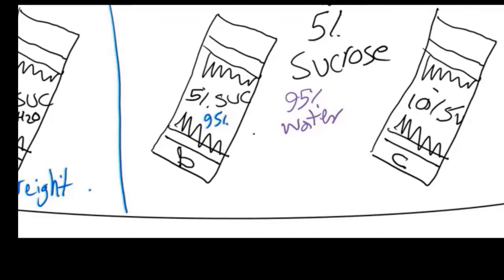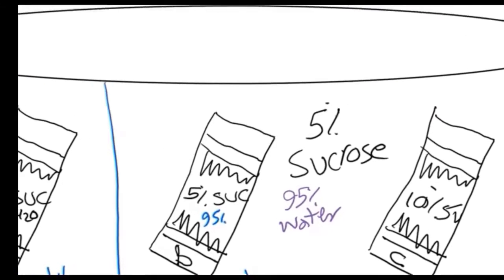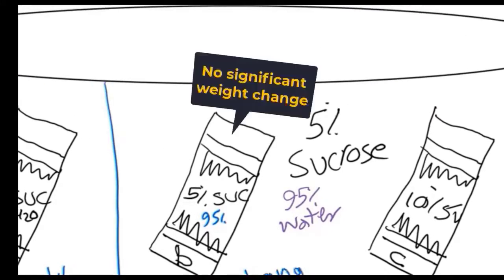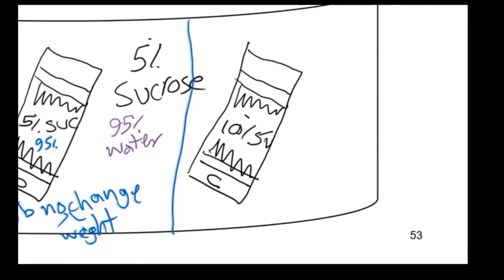Since bag B is isotonic to the outside, there is no significant weight change. It might have some minor weight change, but it is not significant.